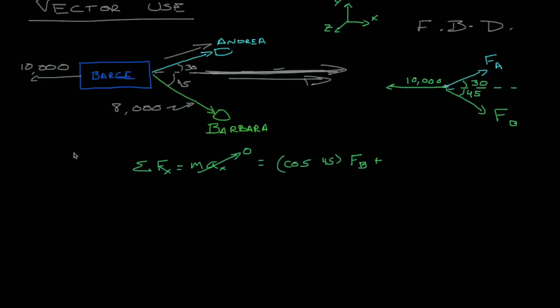Let's go ahead and change colors, plus the cosine of 30 times force A minus 10,000. So in the negative direction we have 10,000 pounds.